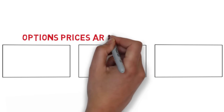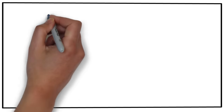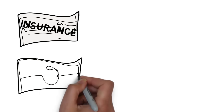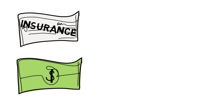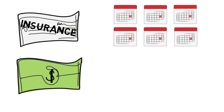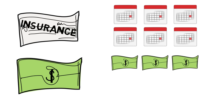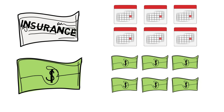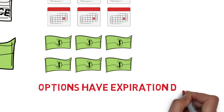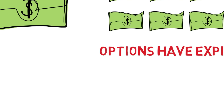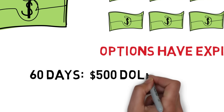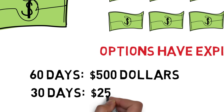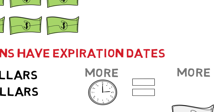Option prices are based on three elements of its underlying stock. The first one is time to expiration. Options are basically insurance, and of course you pay money for this insurance. You don't just get to pay a one-time payment and have insurance forever — you have to pay month after month. So the longer you have it, the more money you will have to pay. An option with 60 days until expiration might cost $500, when the option with only 30 days to expiration only costs $250. So more time equals more money.